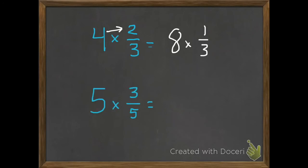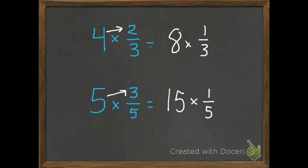Here's another example. If I have 5 times 3 fifths, we don't change our denominators — we're just going to multiply our 5 times our 3, which equals 15. To make this an equation, we're going to do 15 times 1 fifth. Today we're focusing on equations; tomorrow we'll be learning this slightly differently.